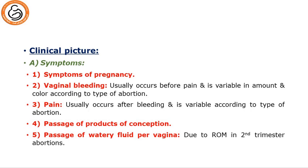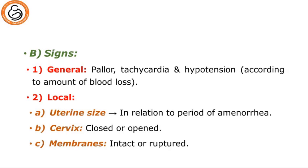For the clinical picture, symptoms and signs: for symptoms, first we have symptoms of pregnancy. This is followed by appearance of vaginal bleeding, which usually occurs before pain and is variable in amount and color according to the type of abortion. Pain usually occurs after bleeding and is variable according to the type of abortion. Then passage of products of conception and passage of amniotic fluid per vagina due to rupture of membranes in second-trimester abortion. Signs include pallor, tachycardia, hypotension according to blood loss; uterine size in relation to the period of amenorrhea; cervix is either closed or open; and membranes either intact or ruptured.